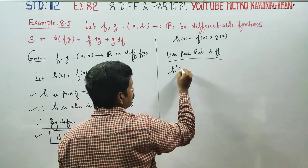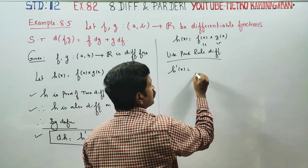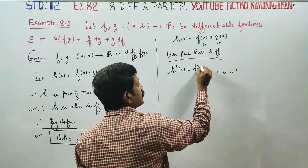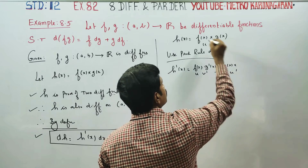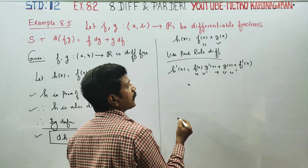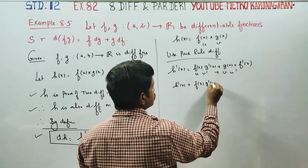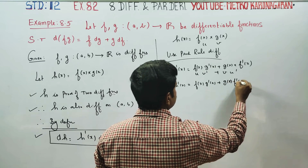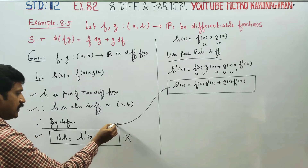Differentiating h, we get H'(x). Using the uv product rule formula: u is f(x), differentiate v to get g'(x); v is g(x), differentiate u to get f'(x). So H'(x) is equal to f(x) into g'(x) plus g(x) into f'(x).